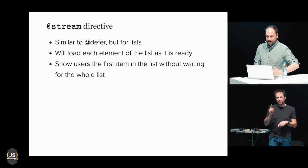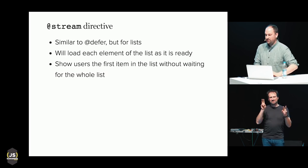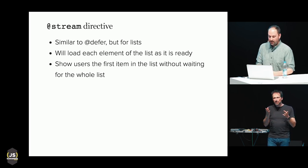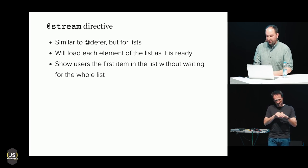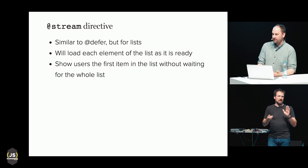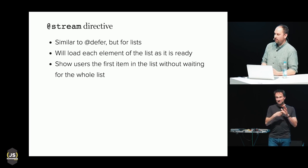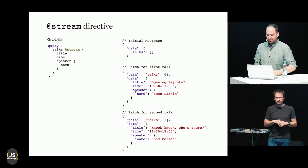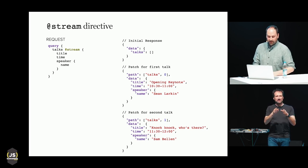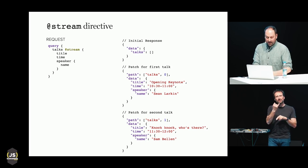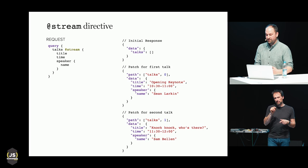There's also another experimental directive called stream, which takes advantage of the same multi-part HTTP streaming architecture. This is useful for lists of items — it allows you to start rendering the first item in the list before the rest are finished loading. On small screens you may only have room to show the first one or two items, so it's nice that you can render that right away without waiting for the entire list. The stream directive sends an empty array first, then a patch for each object in the list. You can use both the deferred directive and the stream directive in the same query.